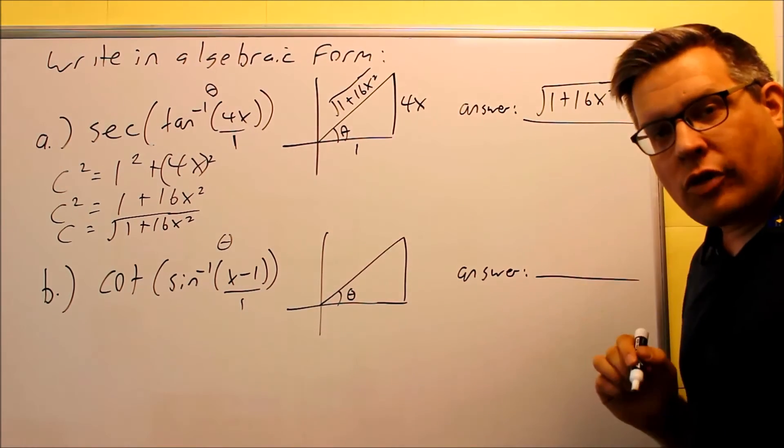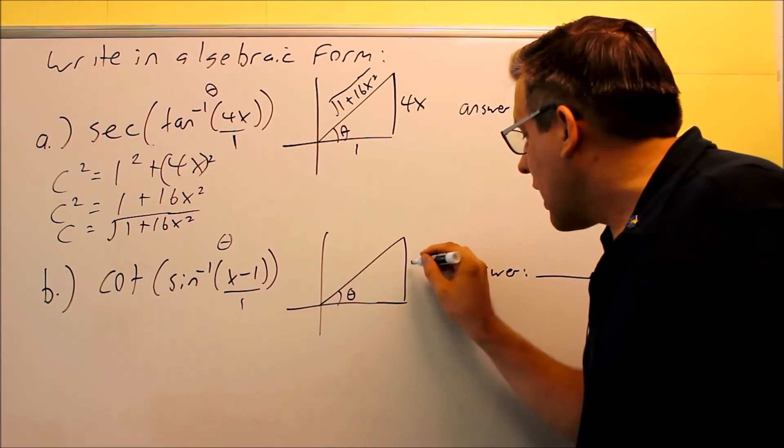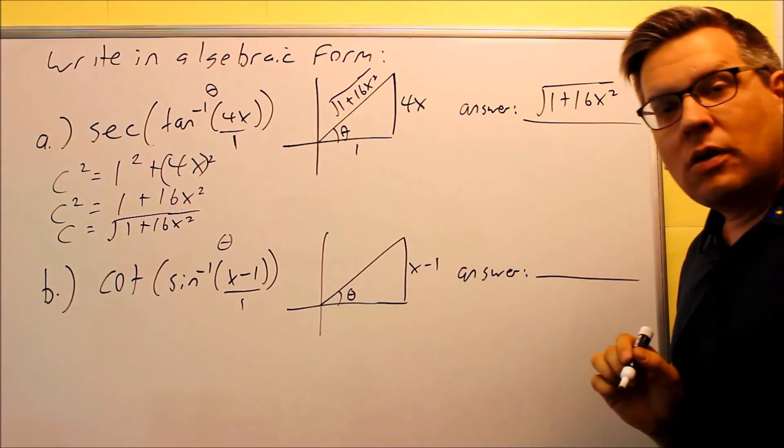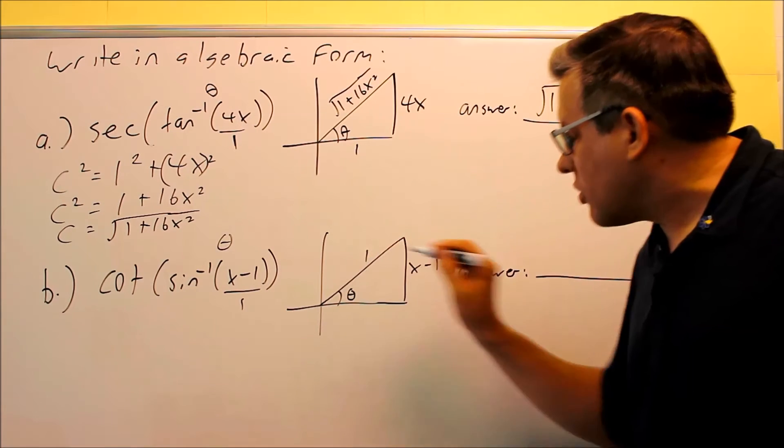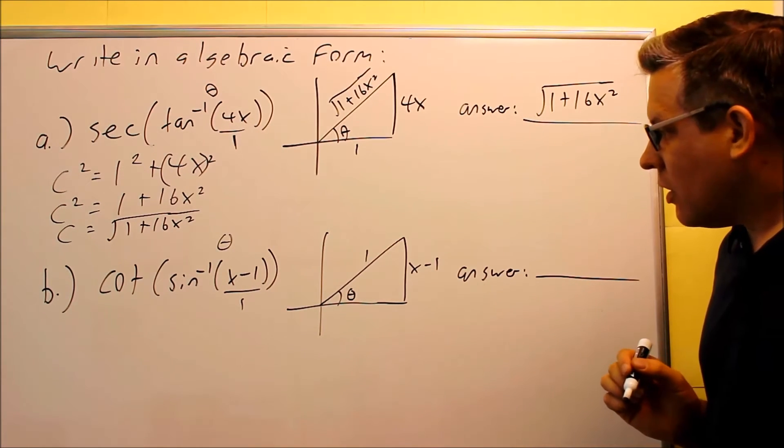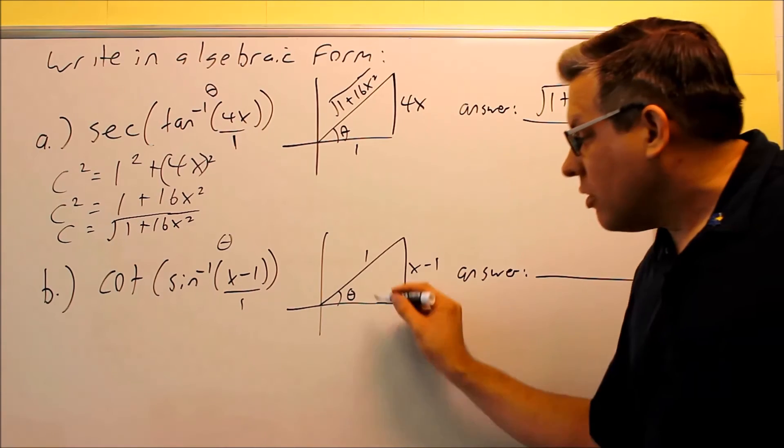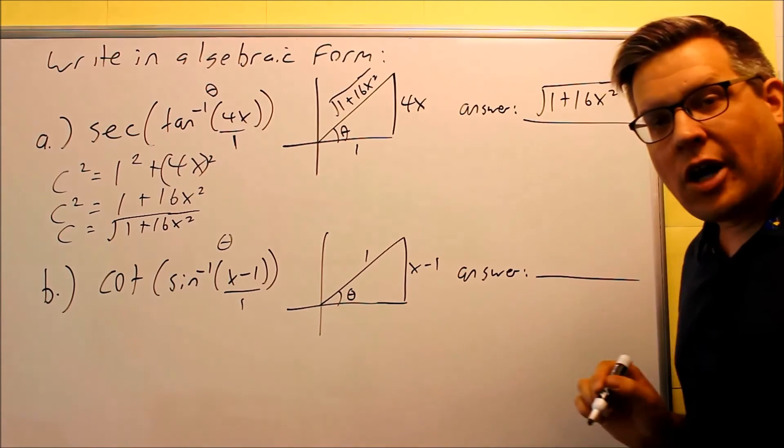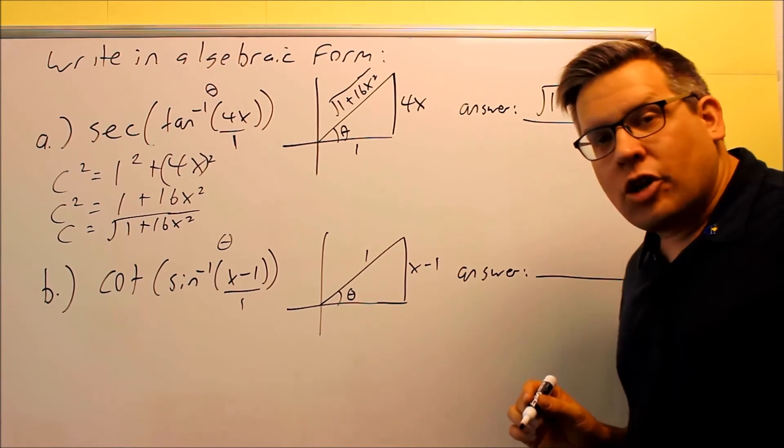Your sine is opposite over hypotenuse, which means that x minus 1 is your opposite side. Hypotenuse, the longest side of the triangle, that's 1 in this case. To get the answer, we need to find this missing side, and we'll use Pythagorean theorem again for that one.